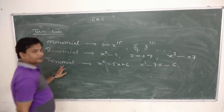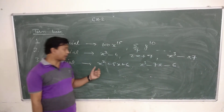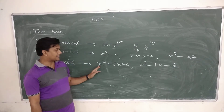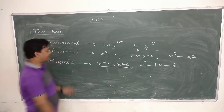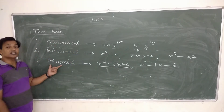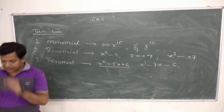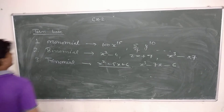Similarly, trinomial — in this type of polynomial we have three terms, like x squared plus 5x plus 6. We have three terms, that's what we call trinomial. So on a term basis, the number of terms decides the type of polynomial.